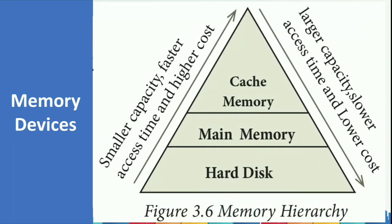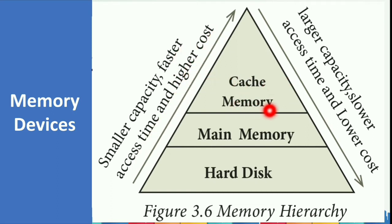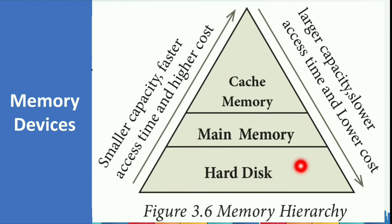Different memory devices are arranged according to capacity, speed, and cost in a memory hierarchy. Smaller capacity, faster access time, and higher cost devices include cache memory. Larger capacity, slower access time, and lower cost devices include the hard disk.